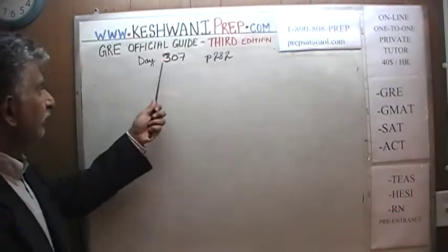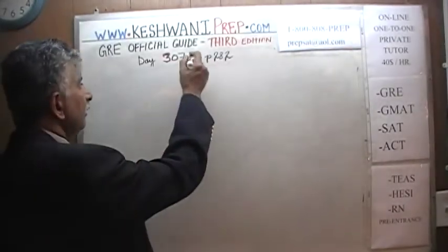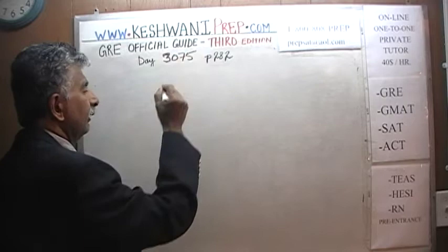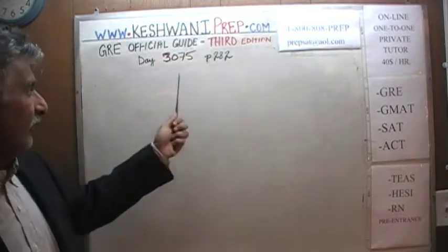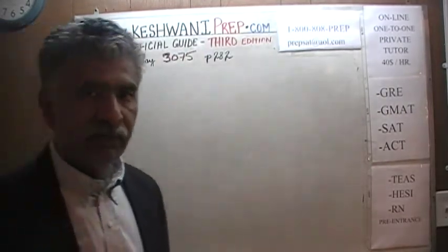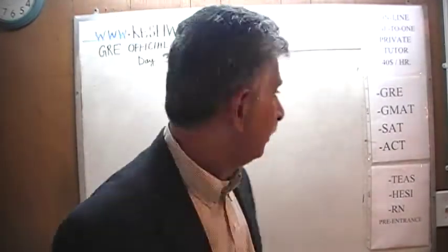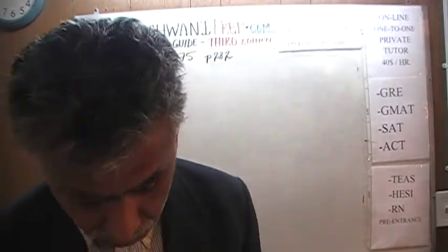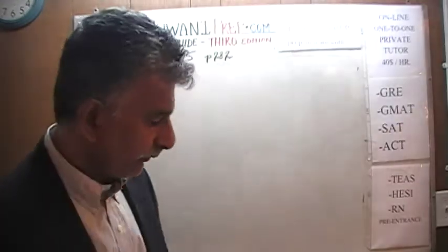Day 3000. The '3' indicates that we are in the third edition. Day 75. We are on page number 282, and we are about to do problem number 12 and 13 — two problems dealing with circles. Let's get going.